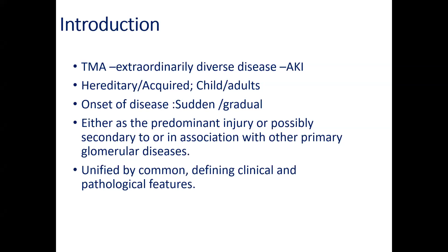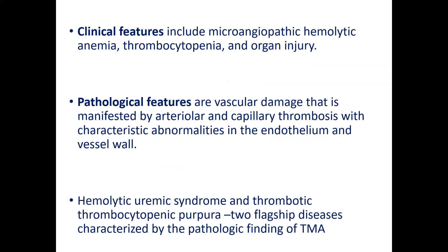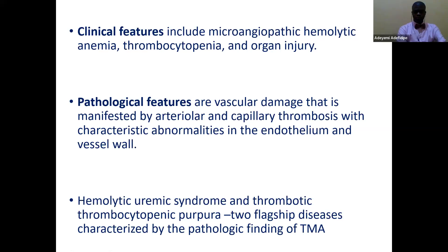What are the common clinical defining features of TMA? They include microangiopathic hemolytic anemia, thrombocytopenia, and end-organ damage. On pathology, it is characterized by vascular damage manifested by arteriolar and capillary thrombosis with characteristic abnormalities in the endothelium and vessel wall. Hemolytic uremic syndrome and thrombotic thrombocytopenic purpura are the two flagship diseases characterized by the pathological finding of TMA.